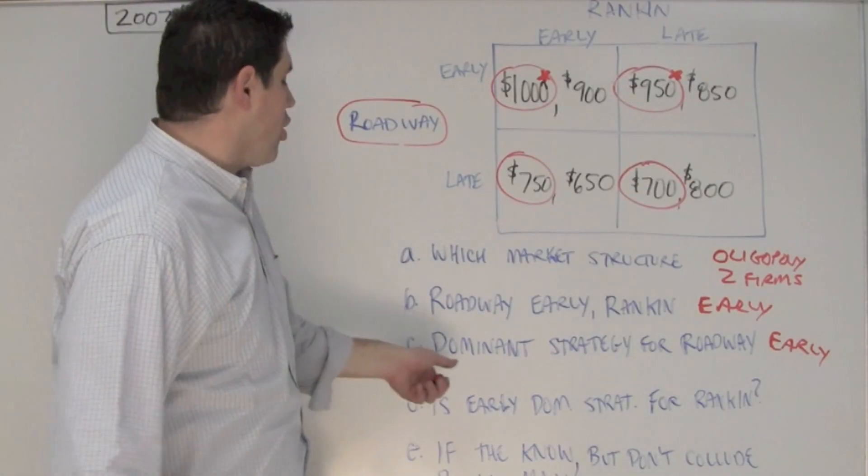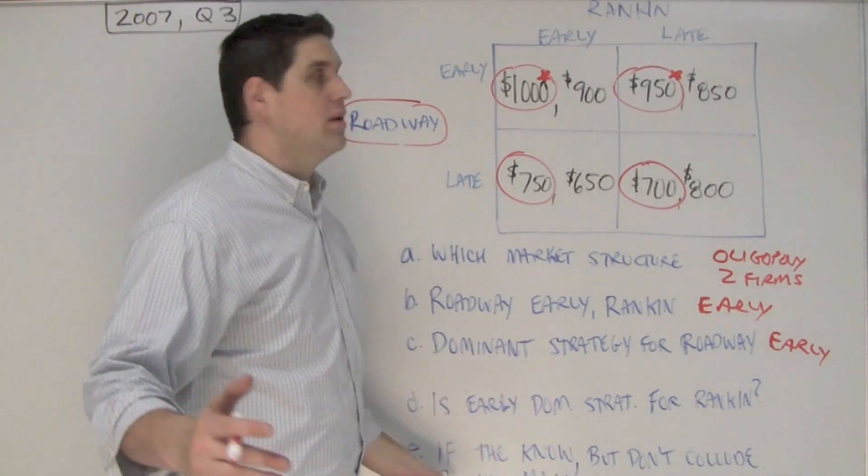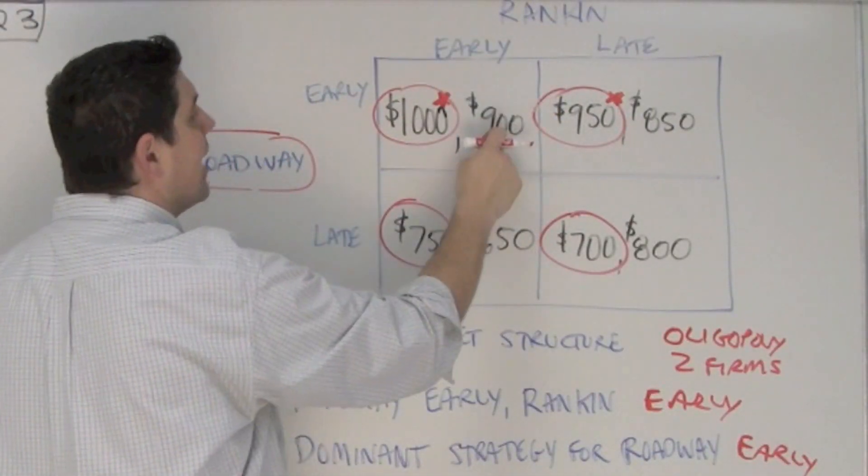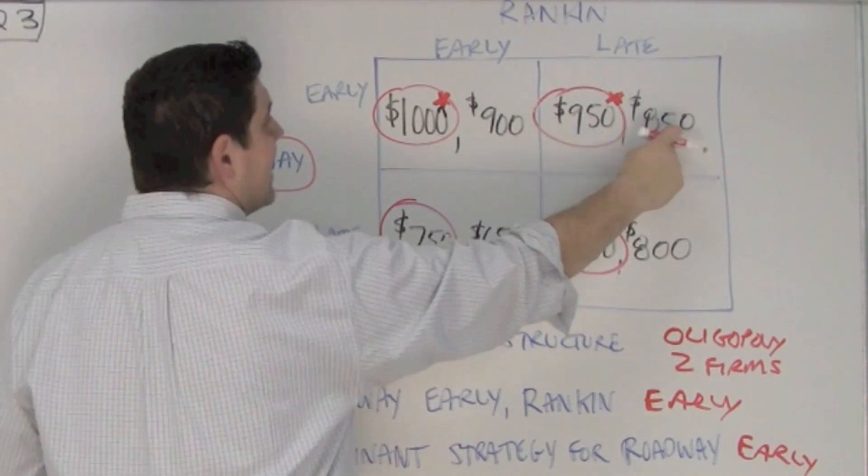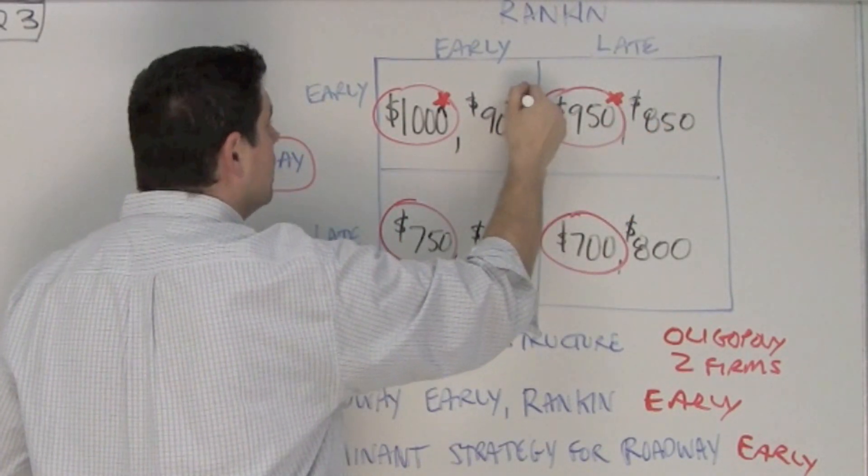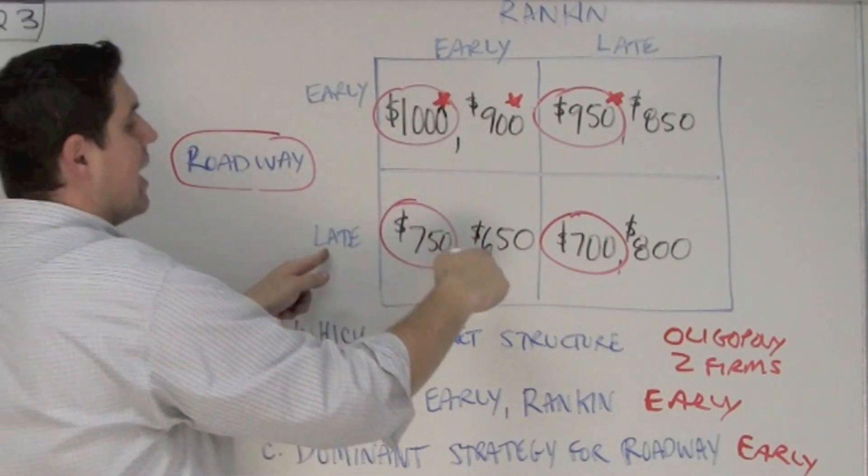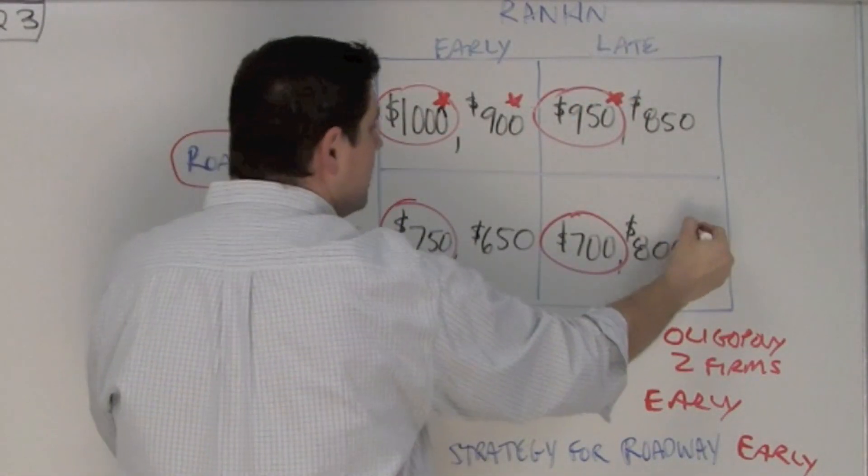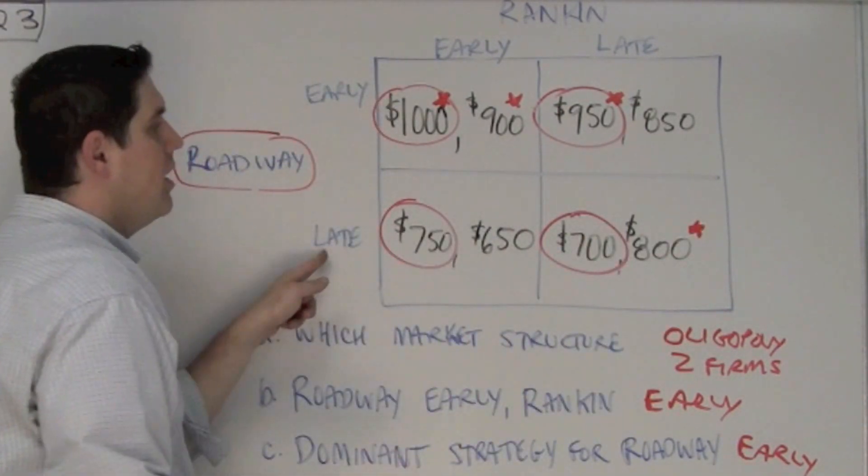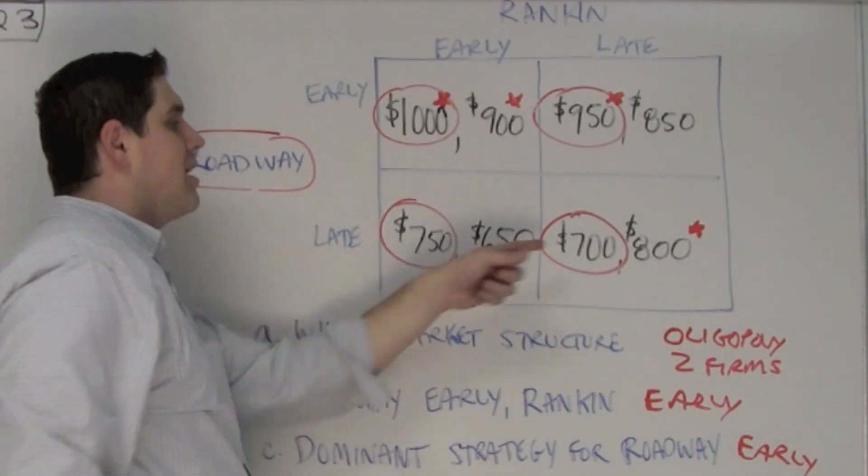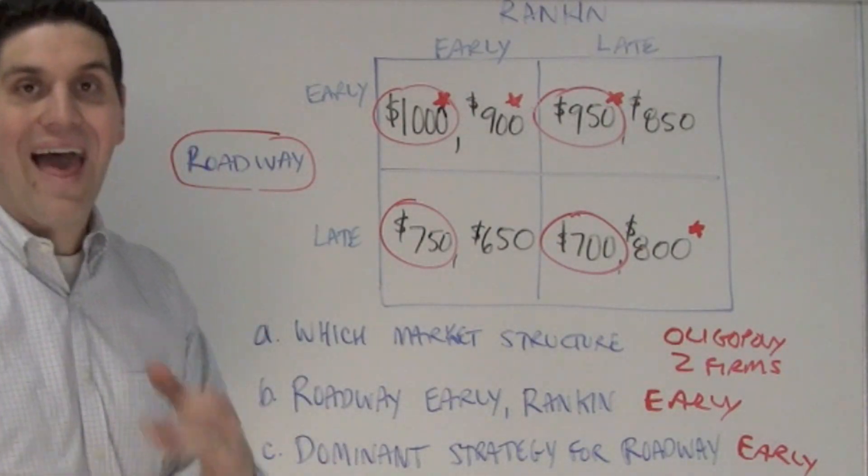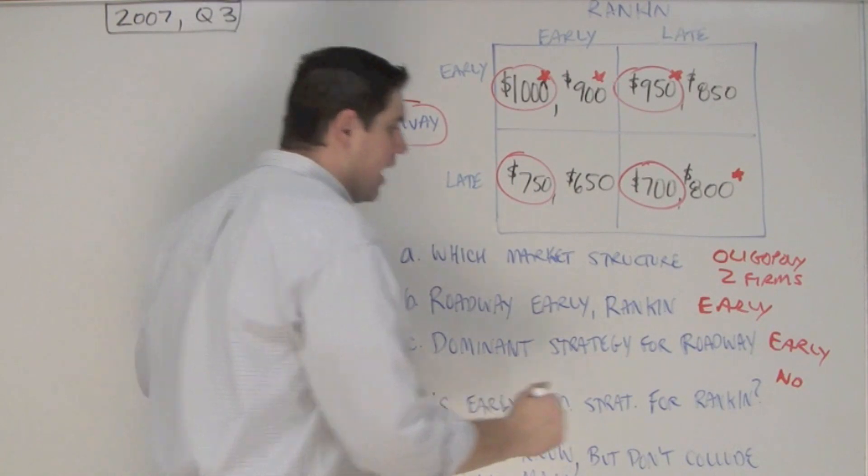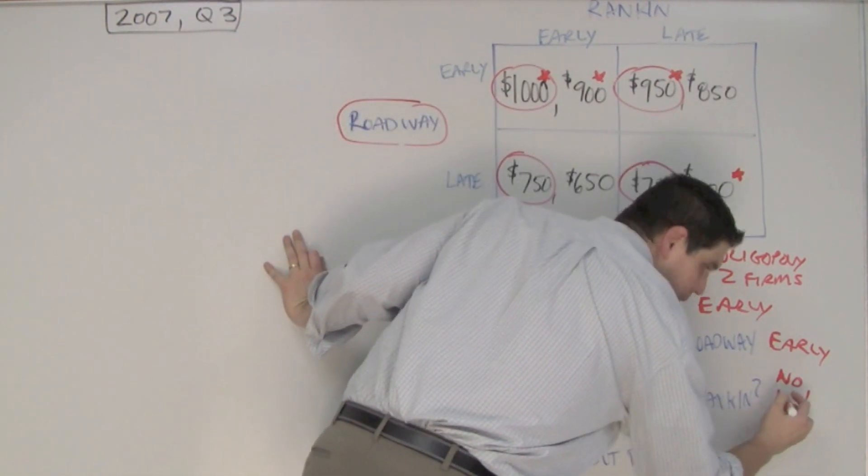Next question to ask you, is early the dominant strategy for Rankin? If Roadway goes early, Rankin can choose between going early and getting 900, or going late and getting 850. Well, they'd rather go early and get 900. If Roadway goes late, Rankin decide to go between getting 650 by going early, or they'd go late and get 800. They'd rather have 800 than 650, so sometimes Rankin should go early, sometimes they should go late, so they do not have a dominant strategy. The answer to the question is no. Early is not their dominant strategy, and the reason why is because they don't have one.